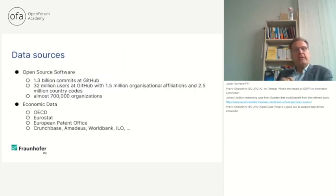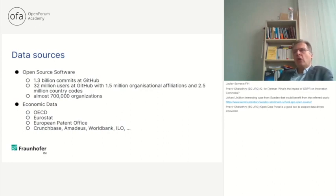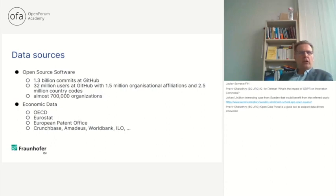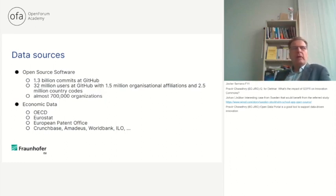The data sources: here we follow a previous paper by Frank Nagle who looked at the impact of public procurement law changes in France on their innovation performance, and he used data from GitHub — therefore we followed this. It means we looked both at the commits, we also looked at the users and their organizational affiliations, and tried as far as the data allowed to attribute that to the different EU member states.